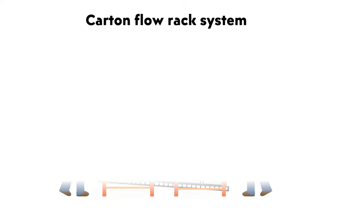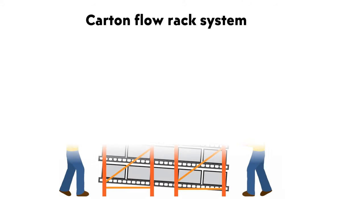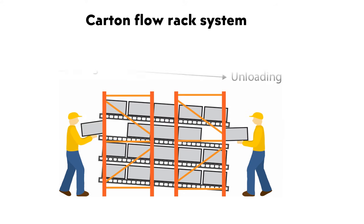Carton or bin floor racking is a highly efficient system that utilizes gravity to roll out products at an adjustable speed. SKUs can be loaded into one of the lanes on a bed of rollers and picked from the other end. This ensures FIFO and enables automatic inventory rotation.